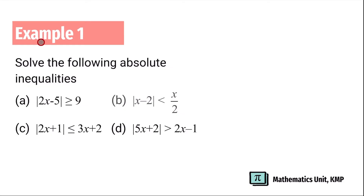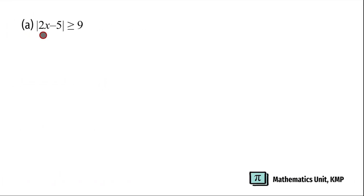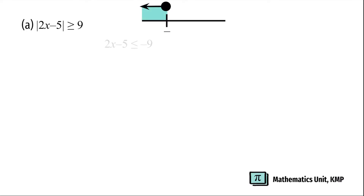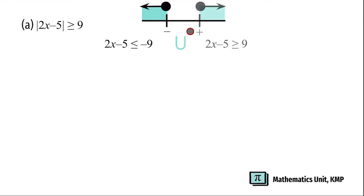Example 1. Solve the following absolute inequalities. Absolute value of 2x minus 5 is greater than or equal to 9. The first step is to define. We have 2x minus 5 less than or equal to negative 9, union with 2x minus 5 greater than or equal to positive 9.